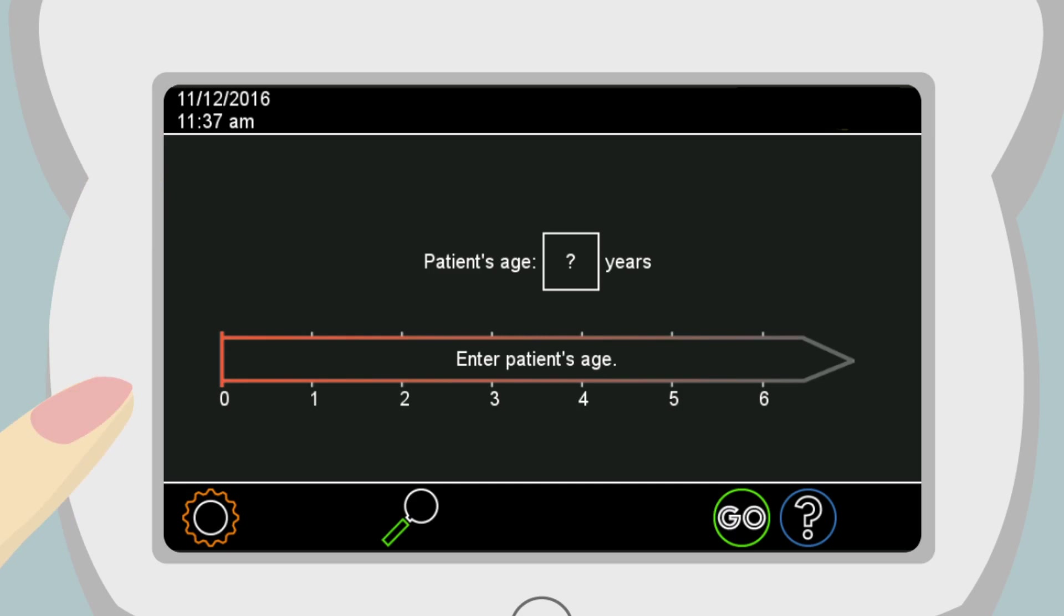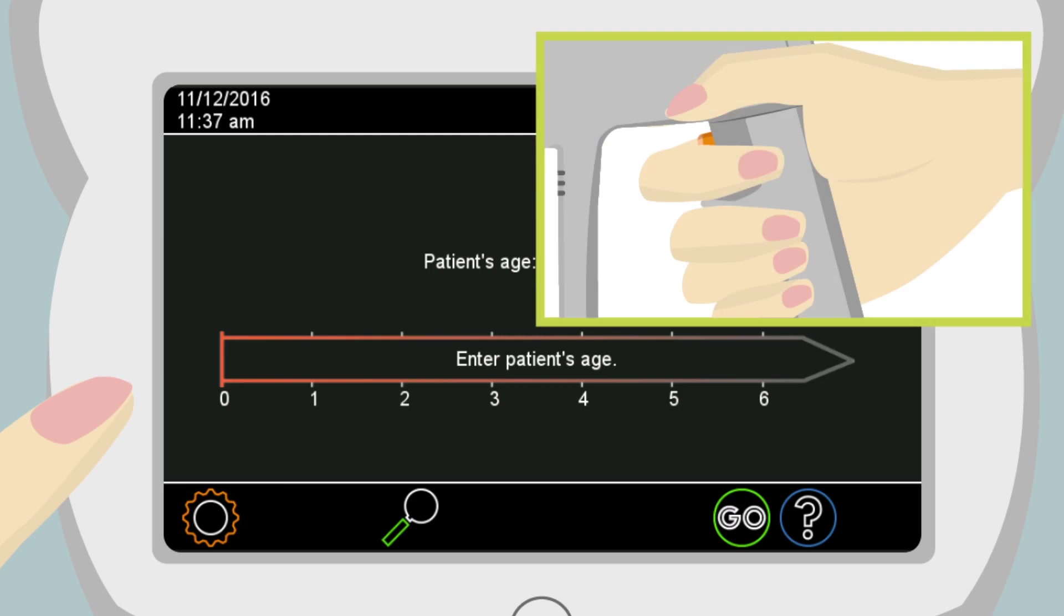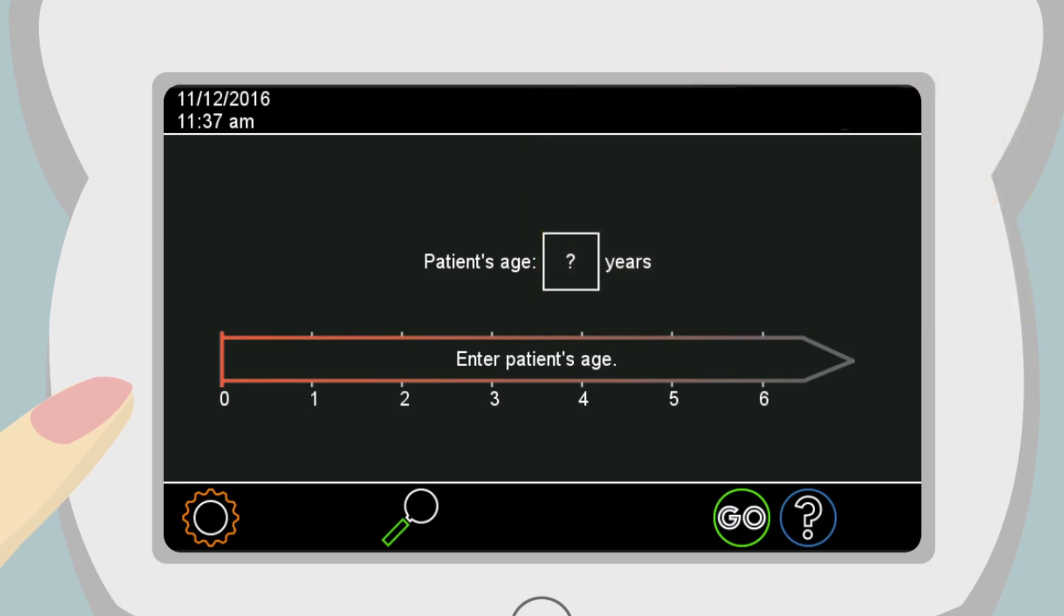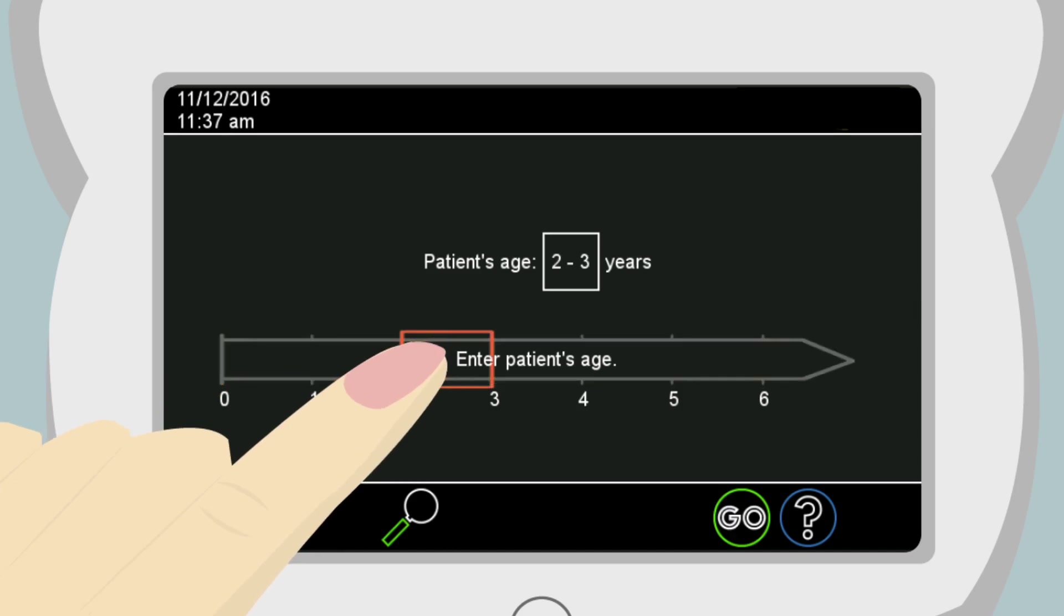This is the home page. If Anna does not see this page, she simply presses the shutter button on the handle once. The referral criteria are age-based, so it is important to select the correct age of the patient by touching the corresponding section on the timeline.